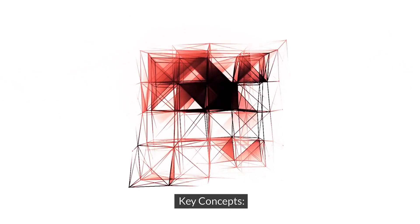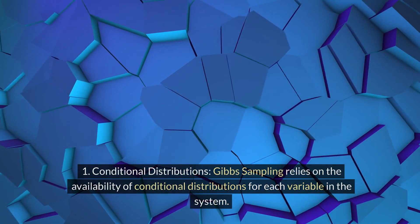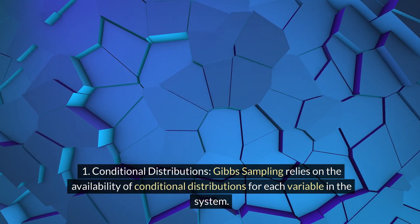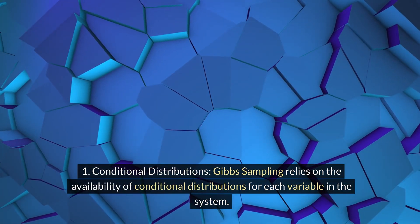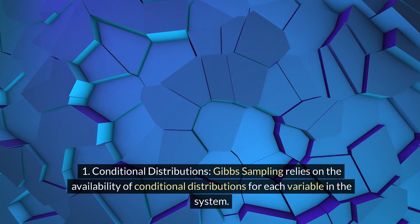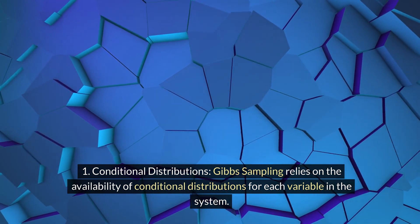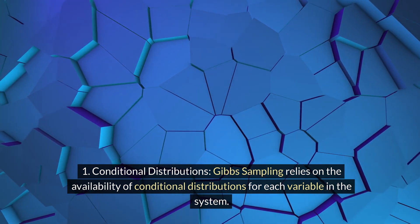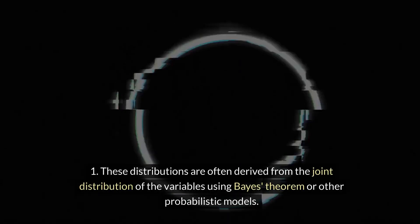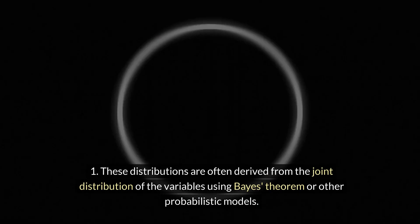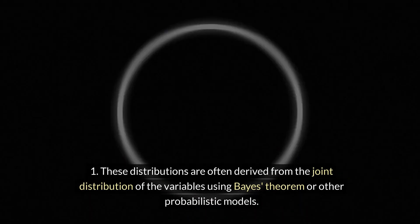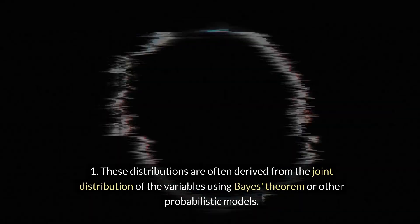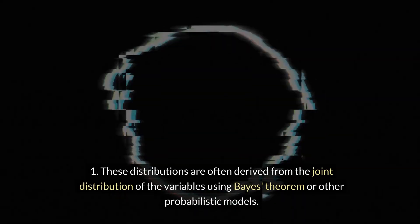Key Concepts. Conditional distributions: Gibbs sampling relies on the availability of conditional distributions for each variable in the system. These distributions are often derived from the joint distribution of the variables using Bayes' theorem or other probabilistic models.